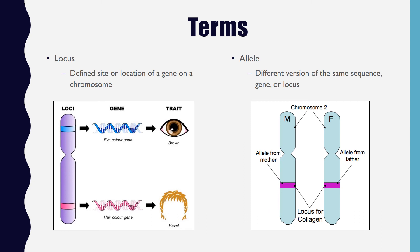The term locus is defined as a site or location of a gene on a chromosome. For example, a blue band at the top of a chromosome representing the gene that codes for eye color — that location would be the locus for that gene. An allele refers to different versions of the same gene. For instance, on chromosome 2, one copy inherited from mother and one from father, the pink bands represent the gene coding for collagen — there is an allele from mom and an allele from dad.